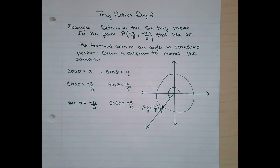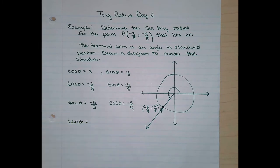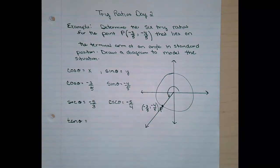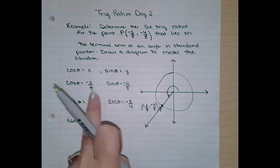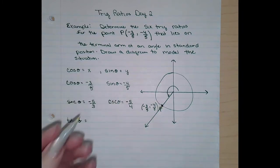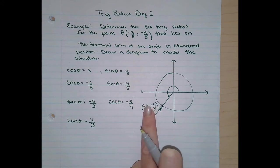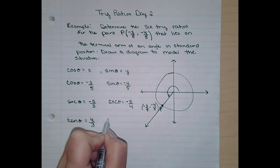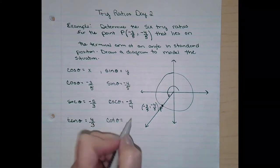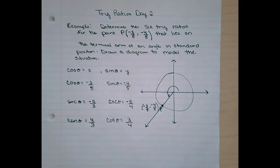We've got four of them. Now the tangent ratio — what do we know about the tangent ratio on the unit circle? Sine over cosine. Same denominators, so they cancel off. The negatives both cancel off and you get four-thirds. Right from here, four over three. And then your cotangent, which is the reciprocal of tangent, would just be three-fourths. That's all they want — the six trig ratios. They're not asking for the angle, just what are the ratios.